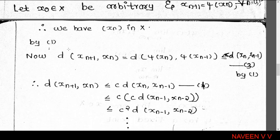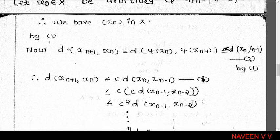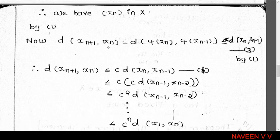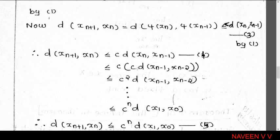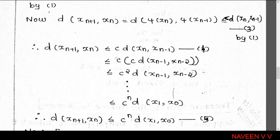We want to prove this sequence is a Cauchy sequence. Consider d(x_{n+1}, x_n). Since x_{n+1} = φ(x_n) and x_n = φ(x_{n-1}), we have d(x_{n+1}, x_n) = d(φ(x_n), φ(x_{n-1})). Using the contraction condition (equation 1), this is less than or equal to c · d(x_n, x_{n-1}).